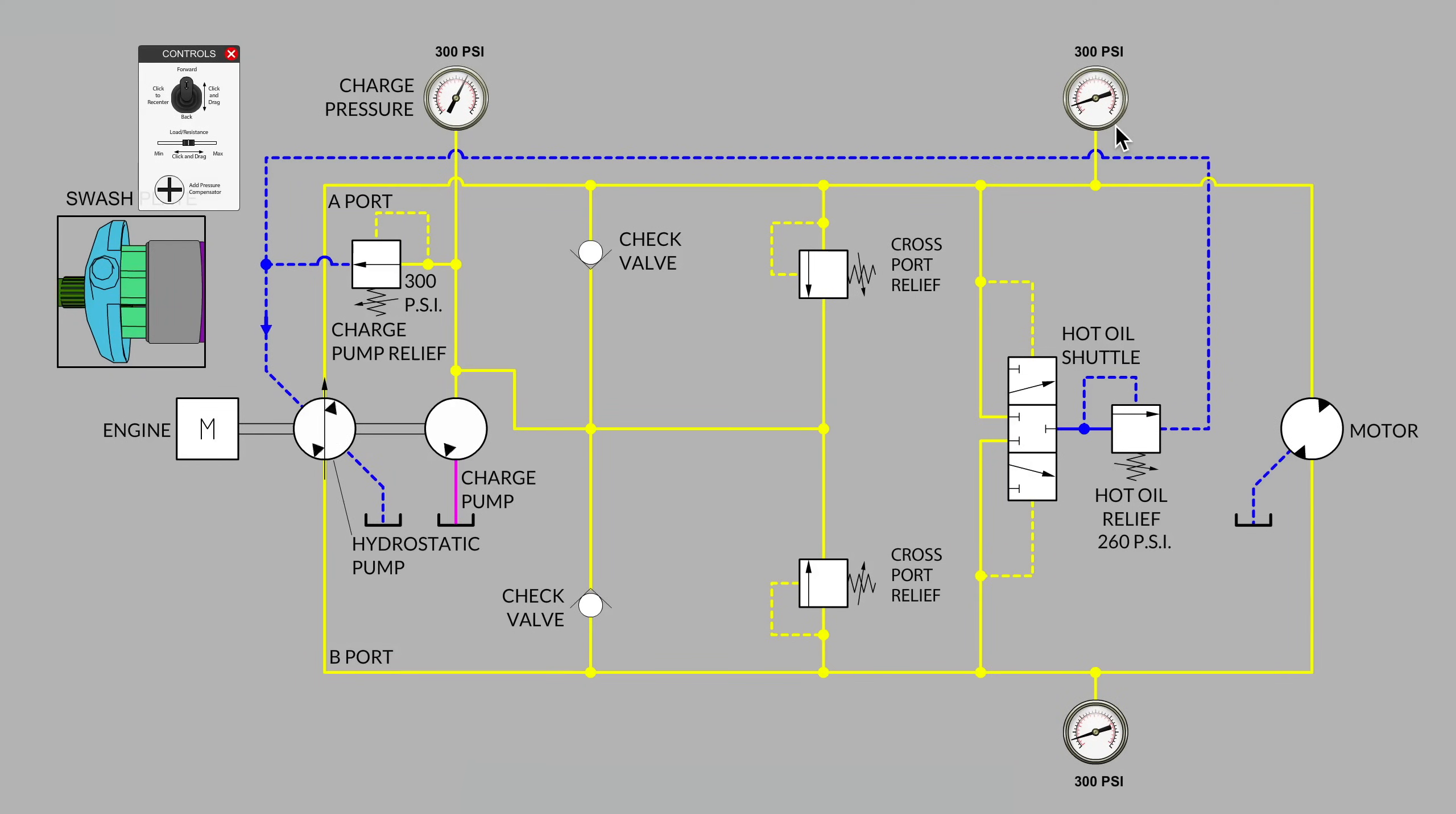In fact, both sides of the main loop, the A loop gauge, 300 psi and same pressure on the bottom of the loop, also 300 psi. So all gauges are currently reading the same value. And no coincidence to find out that that is the setting of the charge pump relief valve.